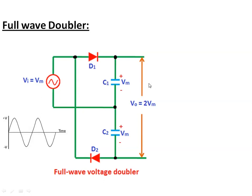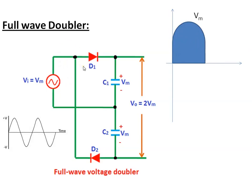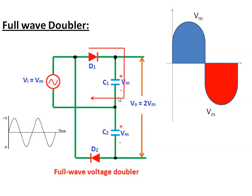This is the full wave doubler. The full wave doubler circuit also consists of two capacitors and two diodes, but the circuit is different compared to the half wave doubler. During the positive peak at the AC input, diode D1 starts conducting and charges capacitor C1 with voltage Vm in the polarity as shown. During the negative peak, diode D1 is blocked and diode D2 starts conducting, charging capacitor C2 with voltage Vm.